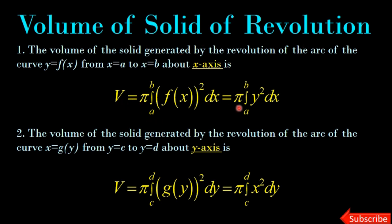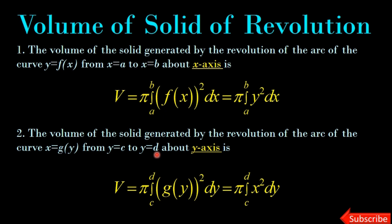Volume V equals π times the integral from a to b of y² dx, when y = f(x) is revolved about the x-axis from x = a to x = b. And volume V equals π times the integral from c to d of x² dy, when x = g(y) is revolved about the y-axis from y = c to y = d.